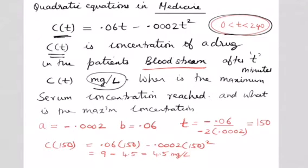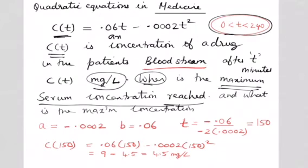Now we want to find out what is the maximum serum concentration reached and when is it reached. Again this is a quadratic equation comparing it with ax² + bx + c. We know that a is minus 0.0002, b is 0.06, and the effective t we can find is minus b by 2a. So that means we are getting a total of 150. So it means after 150 minutes, that means slightly more than two and a half hours, the serum concentration is maximum and the serum concentration is 4.5 mg per liter.